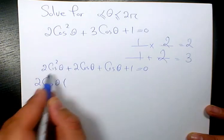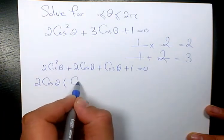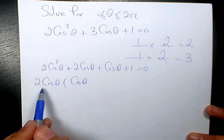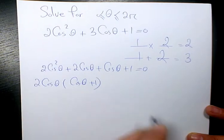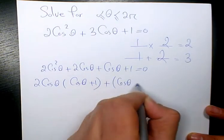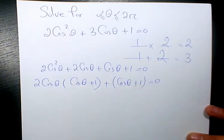And 2 cosine squared divided by 2 cosine is going to be just cosine. 2 cosine divided by 2 cosine is going to be 1. And here I have cosine theta plus 1 equals to 0.